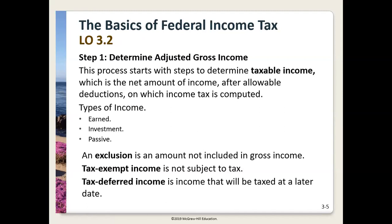Now we're going to focus on federal income tax for the rest of this discussion. Federal income tax for an individual is very complex — there's a whole course I teach on this each fall semester. The first step in determining federal income tax is calculating what's called adjusted gross income, or AGI. It's a very important number on a tax return because it's used to calculate other items. This process starts with steps to determine taxable income, which is the final number we use to determine tax.